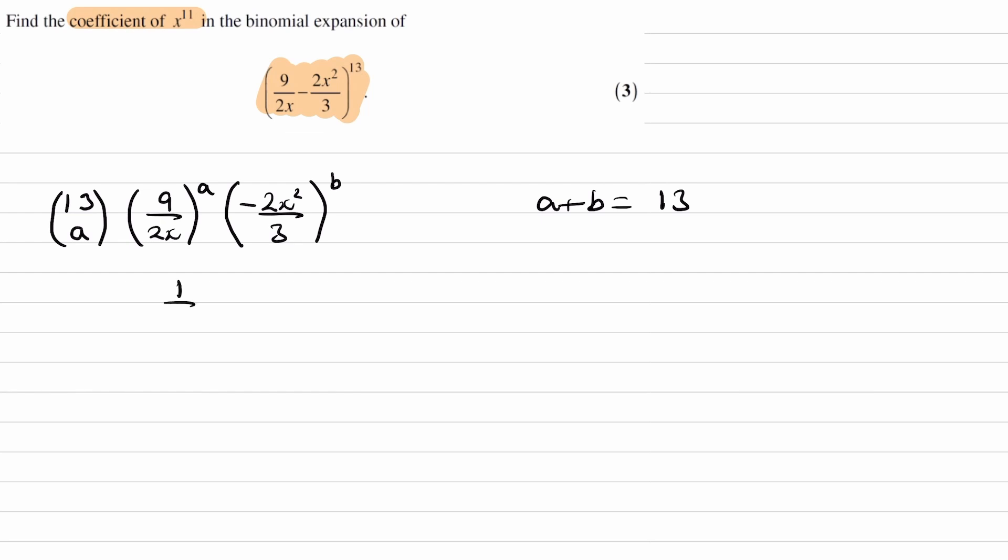So from what we have here, we have 1 over x to the power of a. From what we have here, we have x squared to the power of b. And this is the same thing as x to the minus a times x to the power of 2b. You can then add the powers. That's then x to the power of 2b minus a.